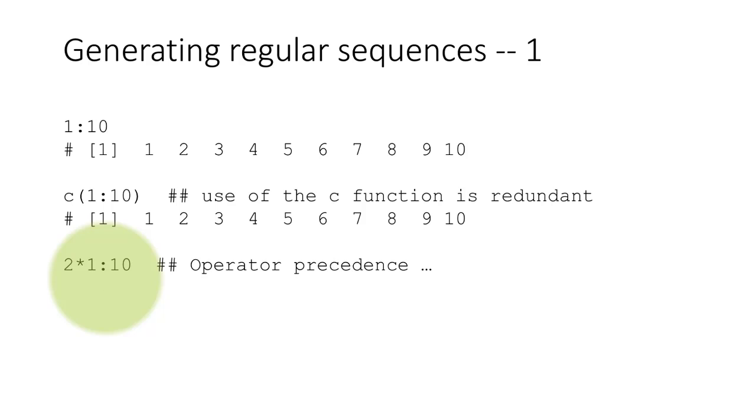It so happens that the colon operator has a very high precedence. And therefore, even though we have written the expression like this, the colon operator is going to get executed first. So we get 1 colon 10 which produces the vector 1, 2, 3, 4, 5, 6, 7, 8, 9, 10 multiplied by 2, giving this result. If we did something like 1 colon 10 star 2, it's really the same as this, because it doesn't matter where you put it. The colon operator has a higher precedence and it's going to happen first no matter what.